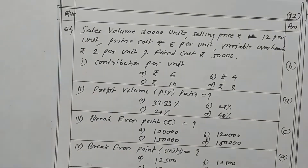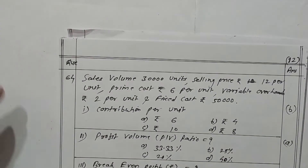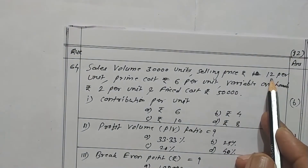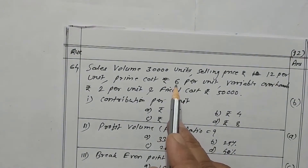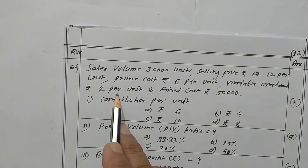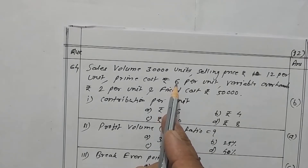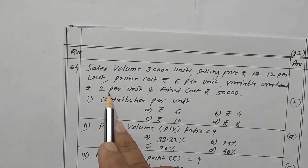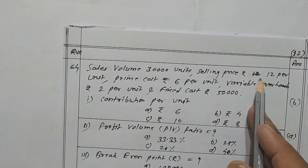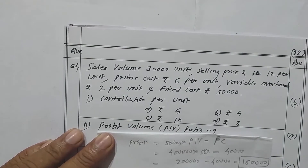Question 64. Sales volume is 30,000 units, selling price is 12, prime cost is 6 per unit, and variable overheads are 2 per unit. Prime cost means variable cost. So 6 plus 2 is 8, and 12 minus 8 gives rupees 4 contribution per unit.